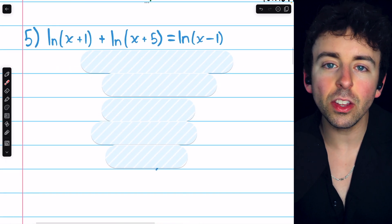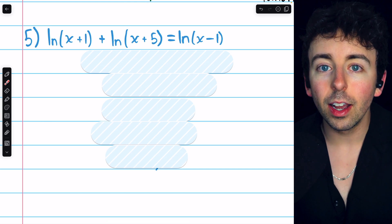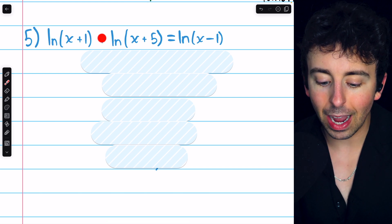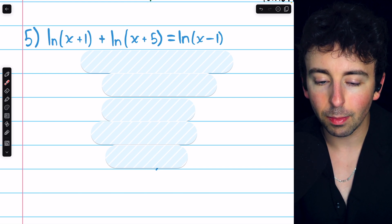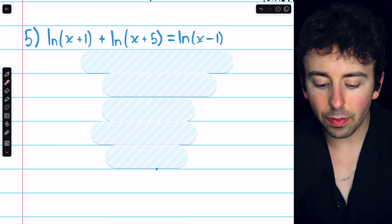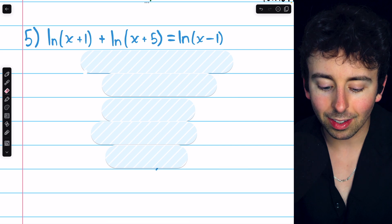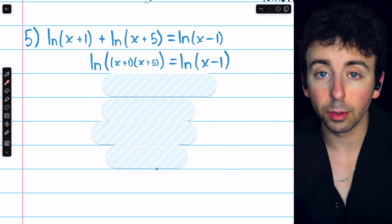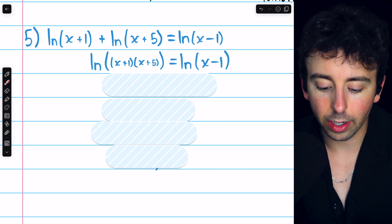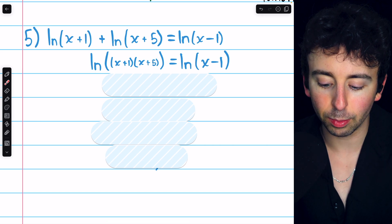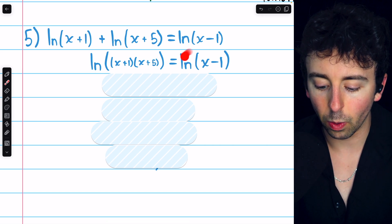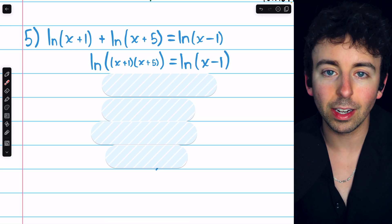Here in this last problem, we will again use our log properties, except instead of a log minus a log, we have a log plus a log. So instead of x plus one divided by x plus five, we can rewrite this as a single log with multiplication, the natural log of x plus one times x plus five. And on the right, of course, we still have the natural log of x minus one.